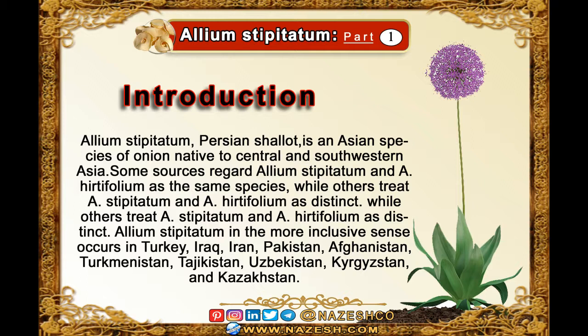Allium stipitatum, Persian shallots, is an Asian species of onion native to central and southwestern Asia. Some sources regard Allium stipitatum and Allium hirtiflorum as the same species, while others treat them as distinct.